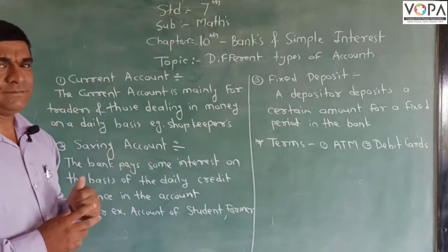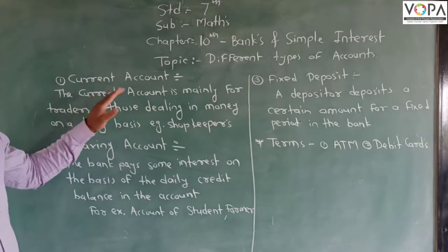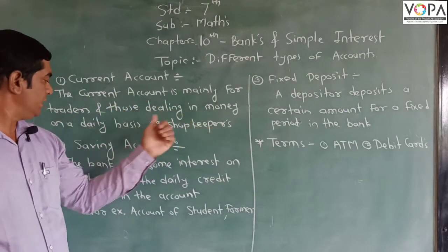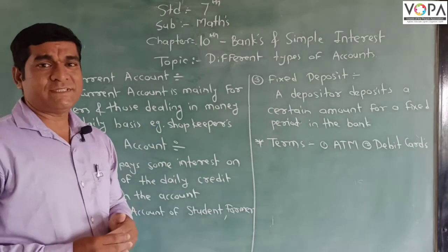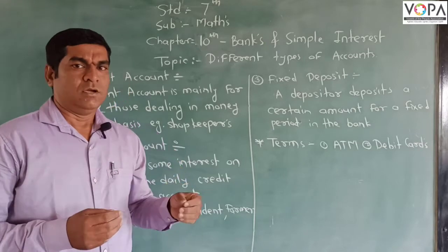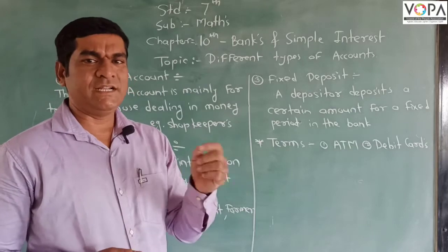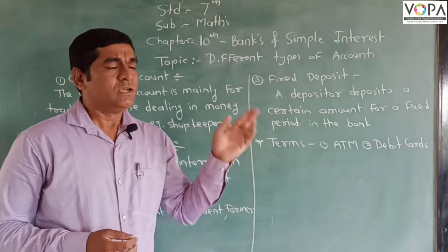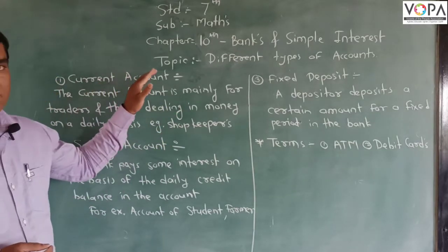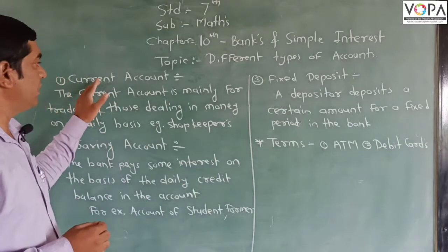There are three types. The first is the current account. The current account is mainly for traders who are trading with money on a daily basis. Again and again they go to the bank, deposit the money, and withdraw the money on a daily basis. They open the account with the bank as a current account.